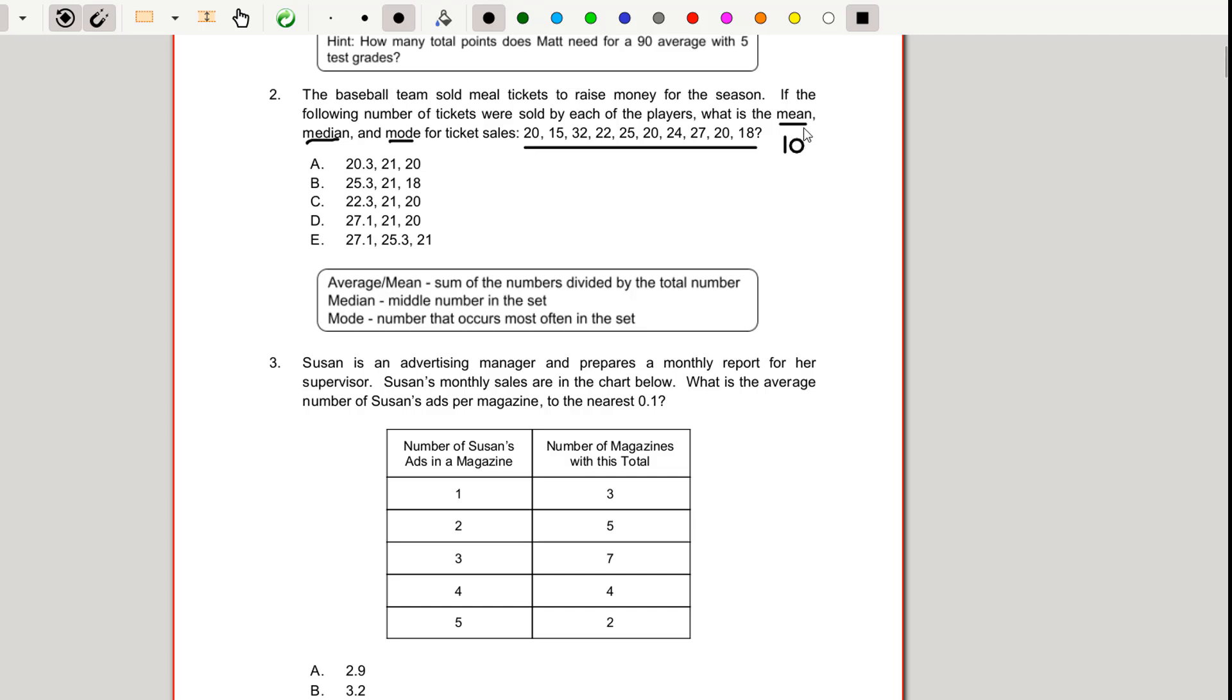First off we need the mean and you can add these numbers up and divide by 10. Put that in your calculator, have the mean calculated whichever way you work best. When I add those up I get a total of 223 divided by 10 is going to give me 22.3 for a mean or average. And so I'm going to look at my score and we're given the mean in the very first option 22.3 and the only one that fits is option C.